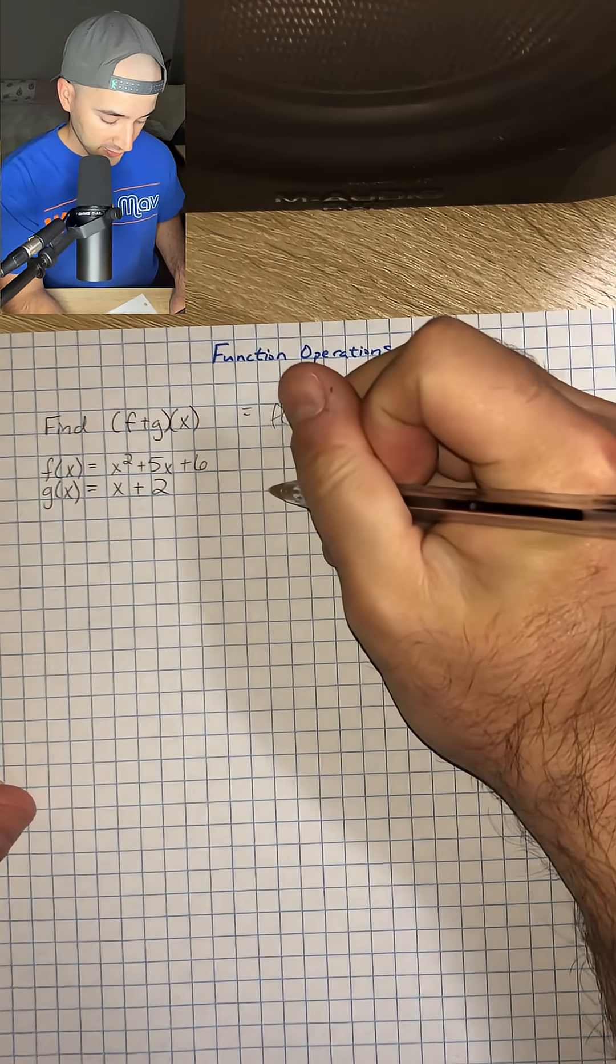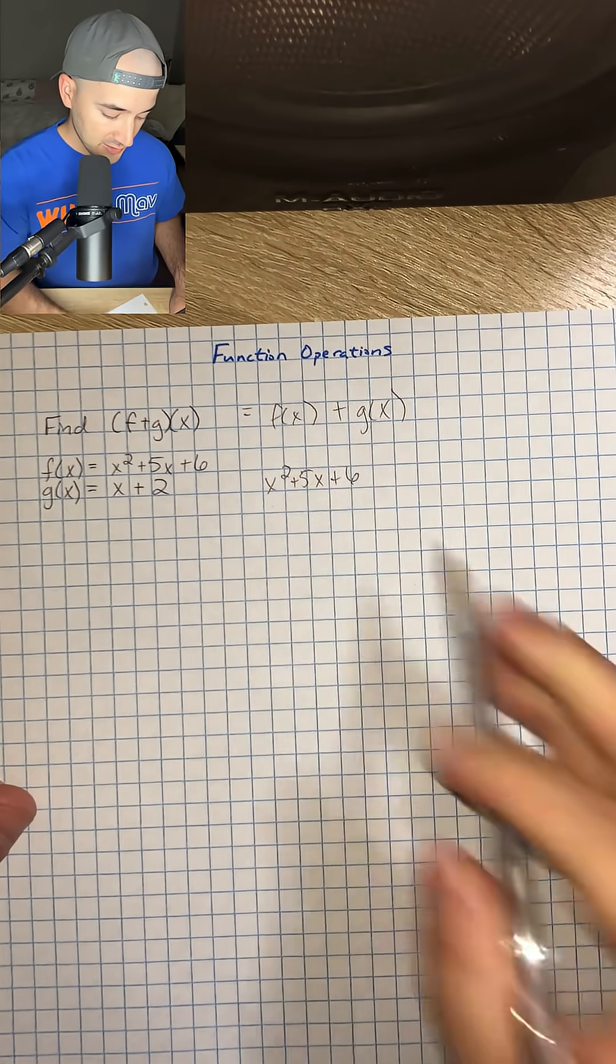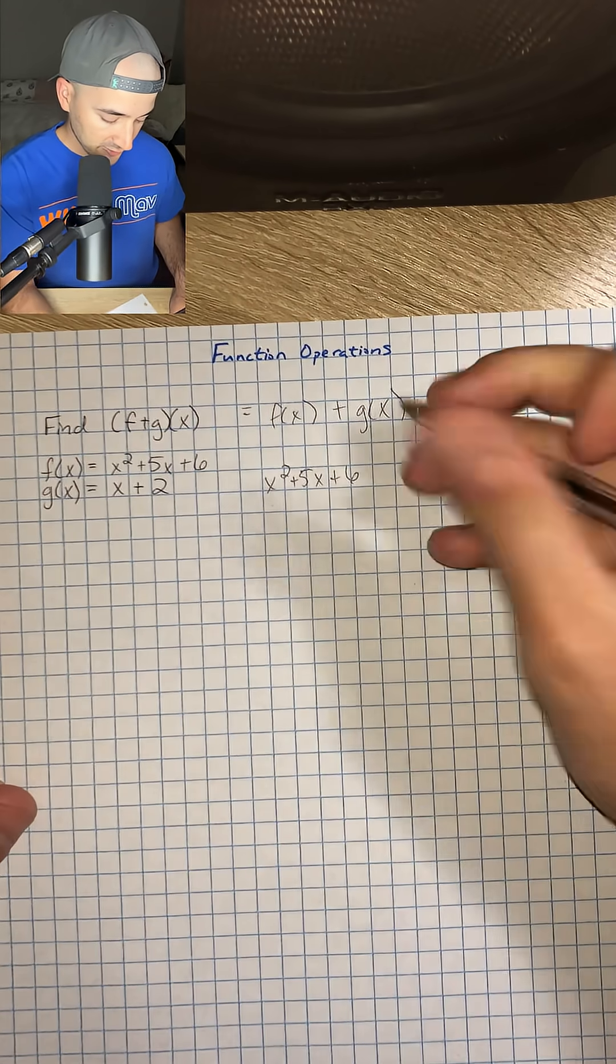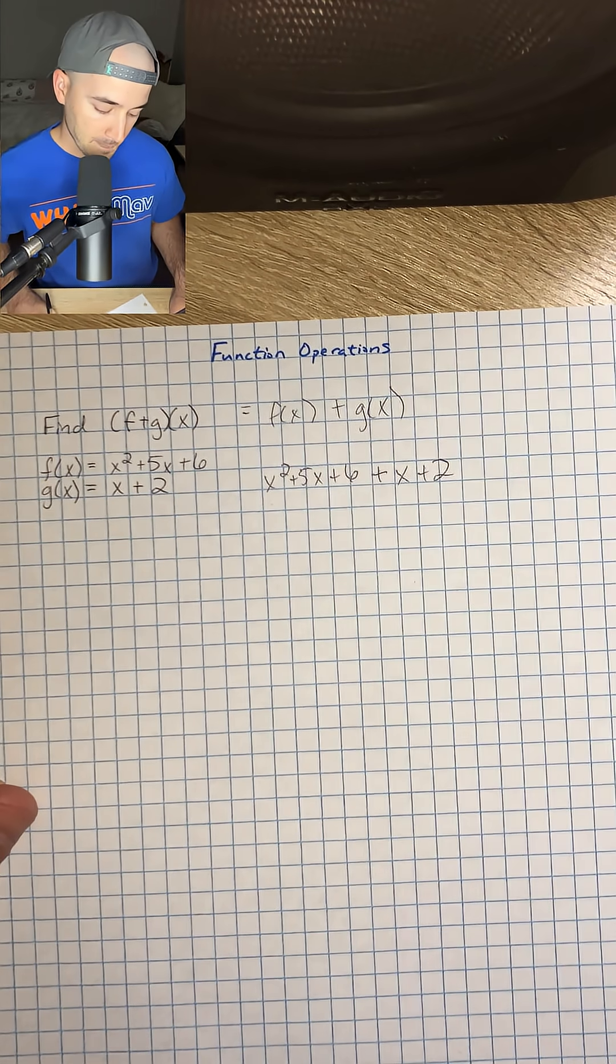f of x is x squared plus 5x plus 6, and then we're going to add g of x, which is plus x plus 2.